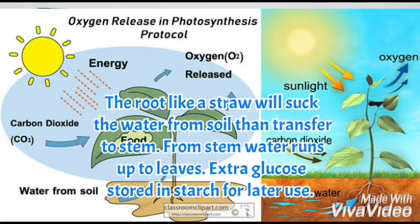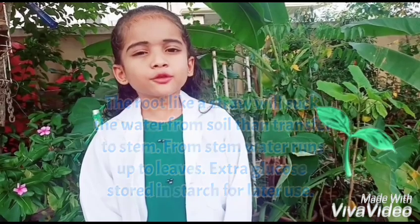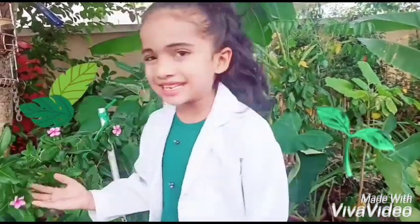The roots, like a straw, suck water from the soil and transfer it to the stem. From the stem, water runs up to the leaves. Excess glucose is stored as starch. The food factory of the plant is the leaf — the kitchen of the plant is the leaf.